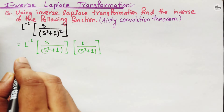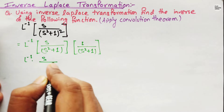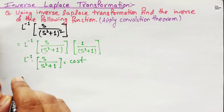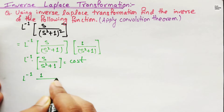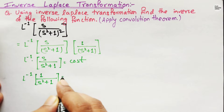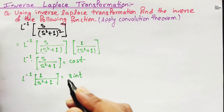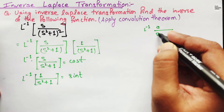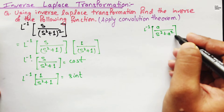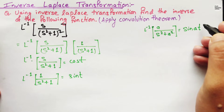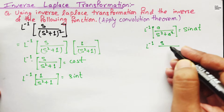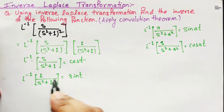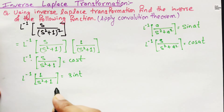We know that the inverse Laplace transformation of s/(s² + 1) equals cos t, and the inverse Laplace transformation of 1/(s² + 1) equals sin t. These are standard formulas: the inverse Laplace transformation of a/(s² + a²) equals sin(at), and the inverse Laplace transformation of s/(s² + a²) equals cos(at). In our case a = 1, so we get cos t and sin t.